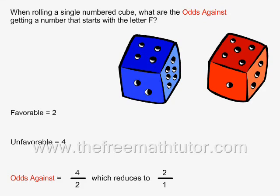That means the number of favorable cases is equal to 2. There are four other sides to the die, so the number of unfavorable cases is equal to 4.